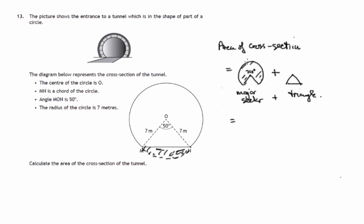So the formula we need, what fraction of the circle is this? It's 310 compared to 360, that fraction of the circle, which we know has area pi r squared. Plus, this triangle, there is a formula that says area of triangle is a half a b sine c.